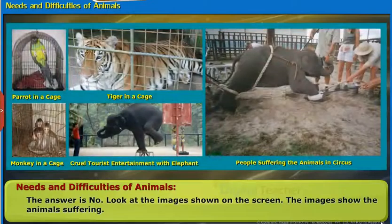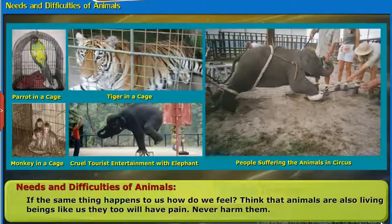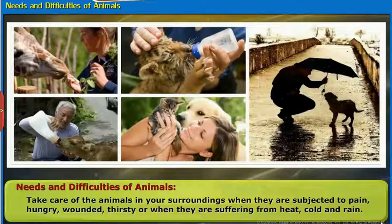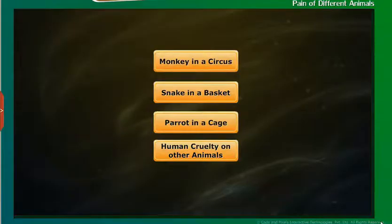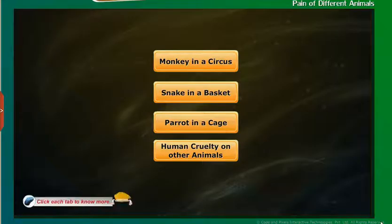Take care of the animals in your surroundings when they are subjected to pain, hunger, wounds, thirst, or suffering from heat, cold and rain. Now let us listen to animals in their own words about how they are suffering because of human activities: monkey in a circus, snake in a basket, parrot in a cage, and human cruelty on other animals.